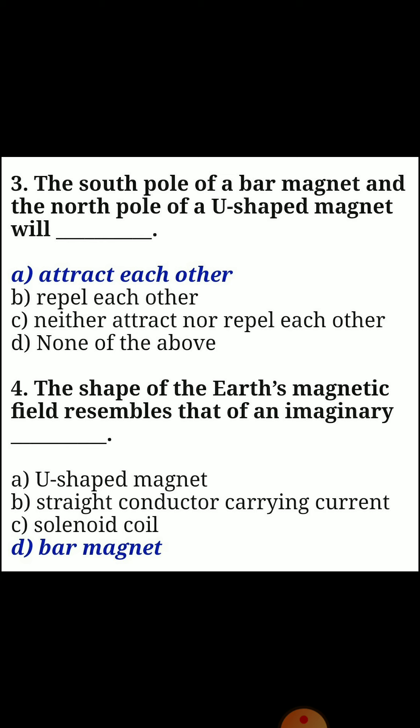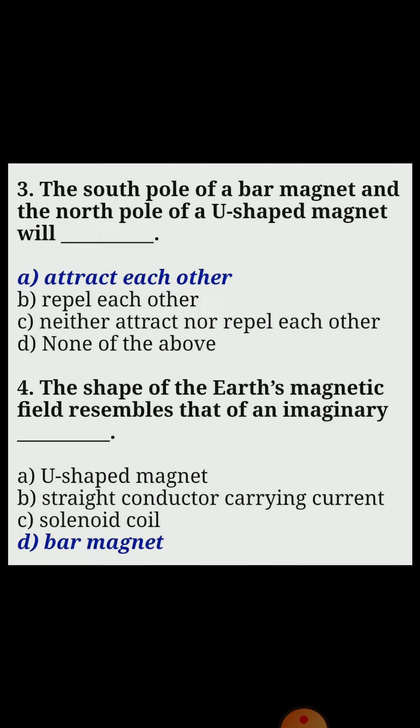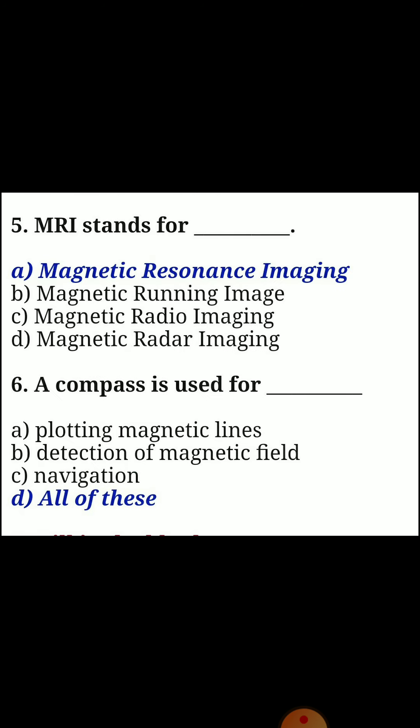Fourth one: the shape of the earth's magnetic field resembles that of an imaginary — answer D: bar magnet. Fifth one: MRI stands for — answer A: magnetic resonance imaging. Sixth one: a compass is used for? Answer D: all of these.